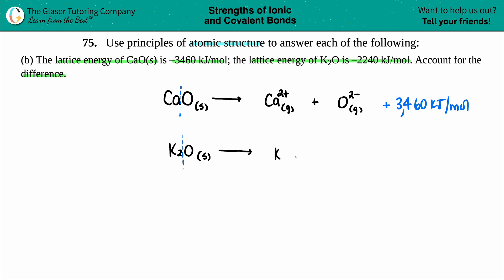For K₂O, we get K⁺ in the gas state plus O²⁻ also in the gas state. Oxygen is a 2-minus; potassium is in group 1, so it's a +1 charge. Since there are two potassiums in K₂O, you get two potassiums here, and since we're breaking it apart, the lattice energy should technically be a positive 2240 kilojoules per mole.